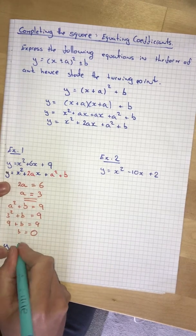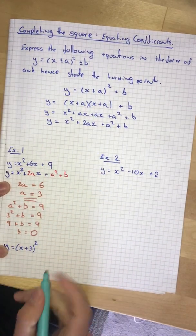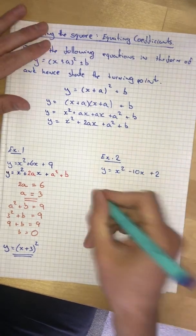And you see it's x plus or minus a. a is 3. Plus or minus b. b is 0. So we just leave it like that. So let's do another one.